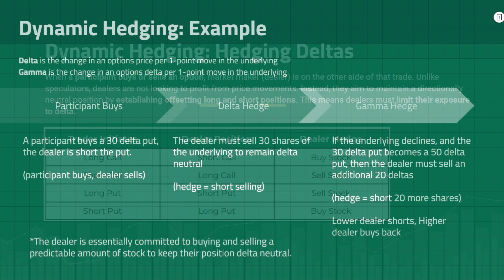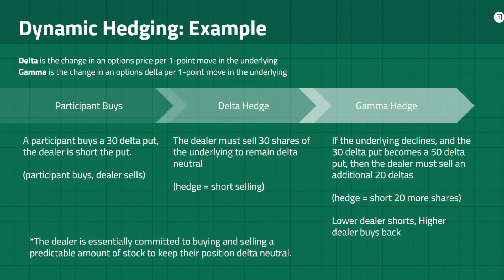Let's look at an example. A quick refresher on definitions: delta is the change in our options price per one point move in the underlying, whereas gamma is the change in the options delta per one point move in the underlying. Let's say a participant buys a 30 delta put — they are long a put. The dealer is then short the put, and in order to hedge this short put position, the dealer must sell 30 shares of the underlying to remain delta neutral. So the hedge impact is short selling. This is known as the delta hedge.